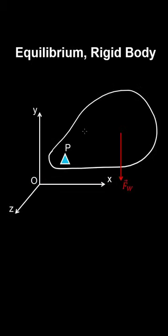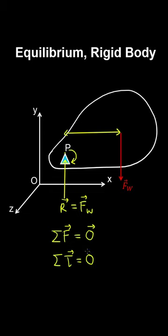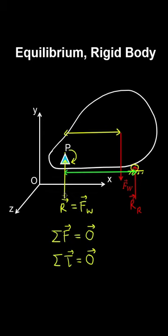Consider a rigid body — one that retains its shape under applied forces. If connected to a hinge, the force of weight acting through its centre of mass produces a torque causing rotation. The hinge prevents translation, so there is a reaction equal to the force of weight; force equilibrium is satisfied but rotational equilibrium is not. To achieve rotational equilibrium, supporting the body on a surface produces a reaction force that opposes the torque due to weight. The right-hand reaction force is then larger than the left-hand reaction force.